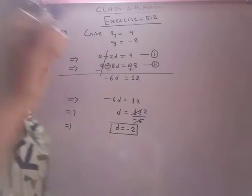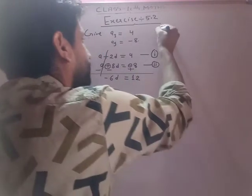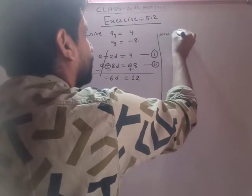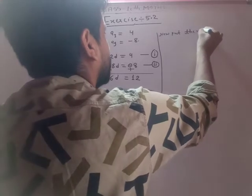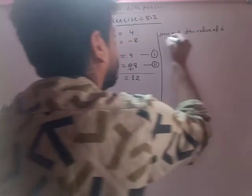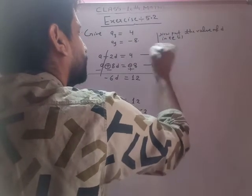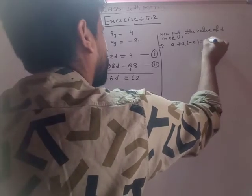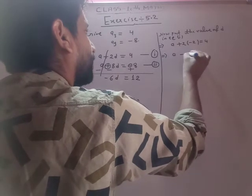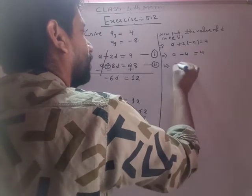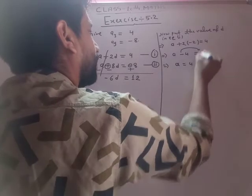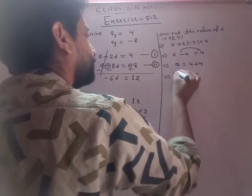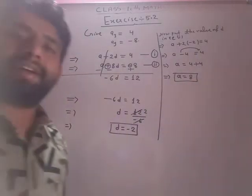Now, using equation one and equation two, we put the value of d in equation one: a plus 2 into (minus 2) equals 4, so a minus 4 equals 4, therefore a equals 8. So a equals 8 and d equals minus 2.